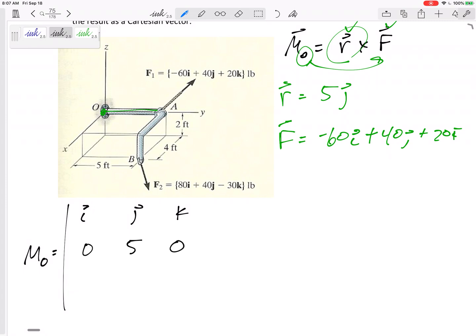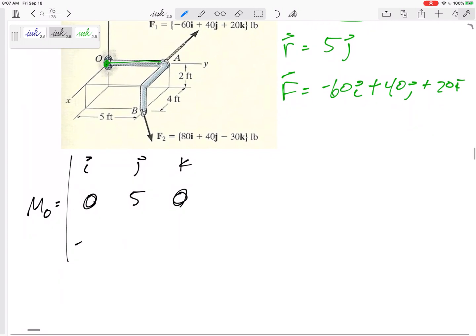So the simpler it is, the easier it is to make mistakes. I like to just still do my 3 by 3 determinant, and so it's okay if you've got some zeros, but just make sure you plug in those zeros, right? The R is 5j, so that's 0, 5, 0. This is negative 60, 40, 20. So how does this work out?